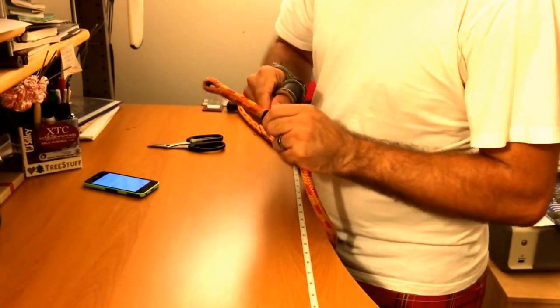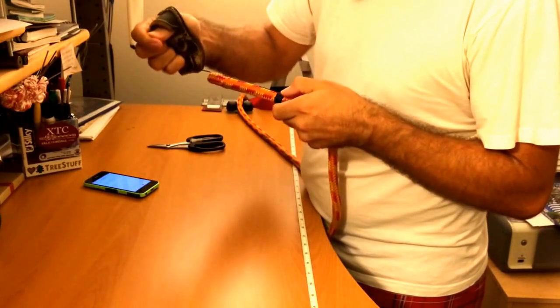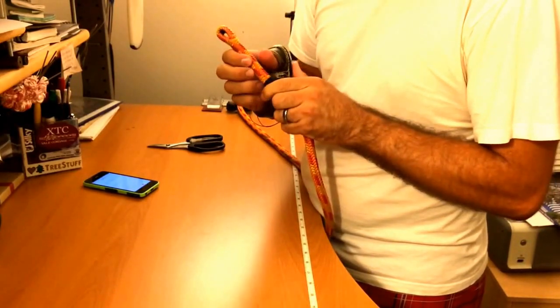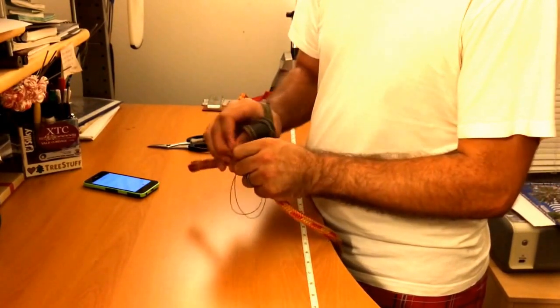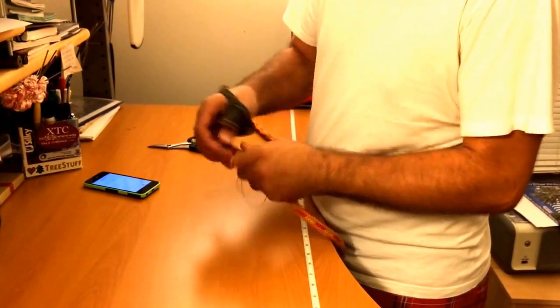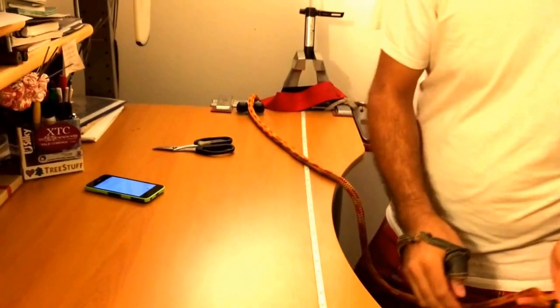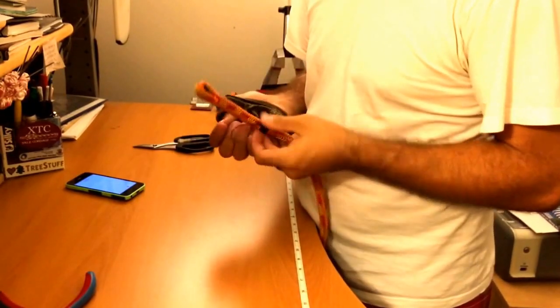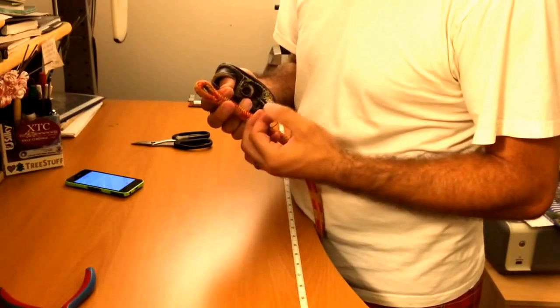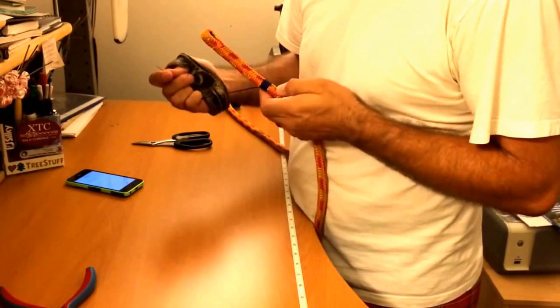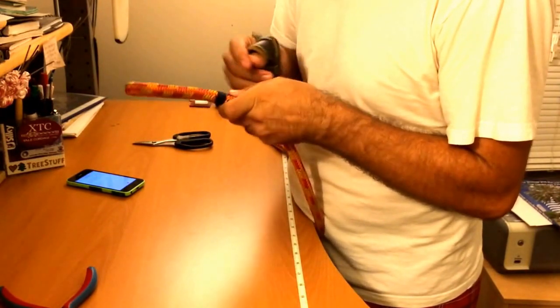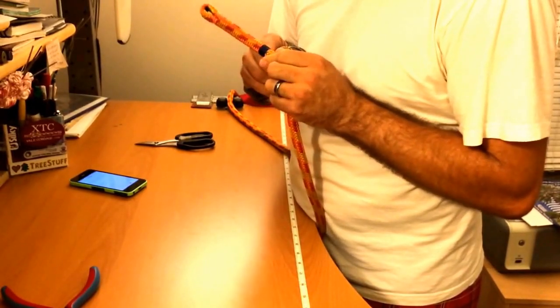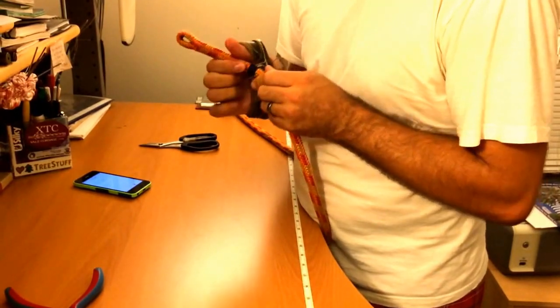Oh, that was a bad needle entry. We've got to do that one again. There we go, much better. Make sure it's centered between those wrapping turns. Oh, come on. Let's go with a pair of pliers on this one.